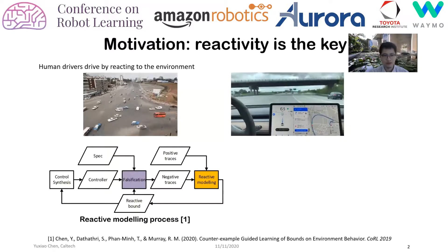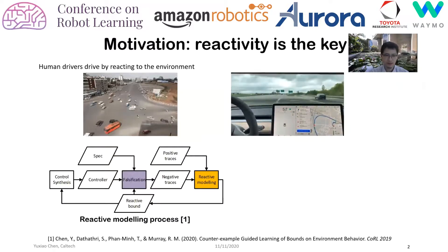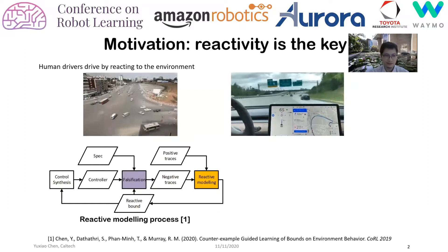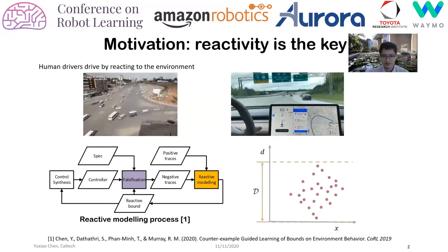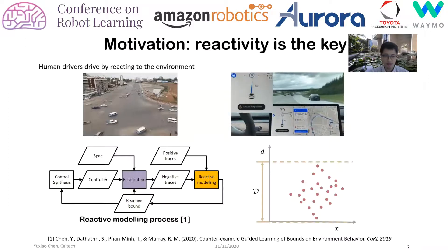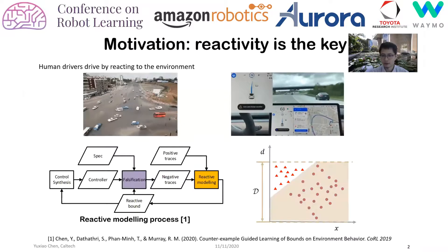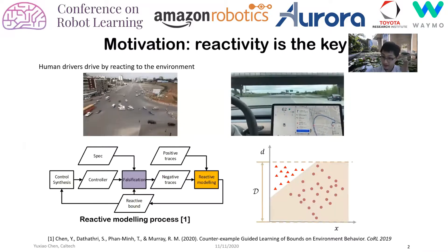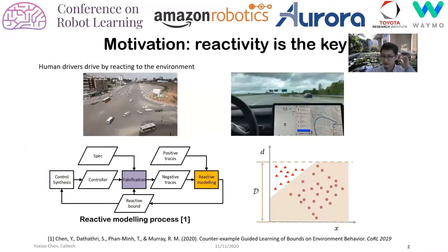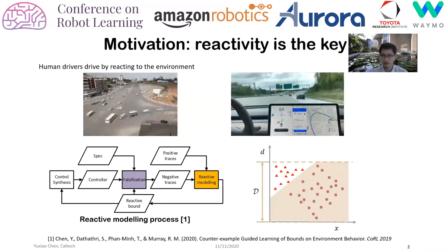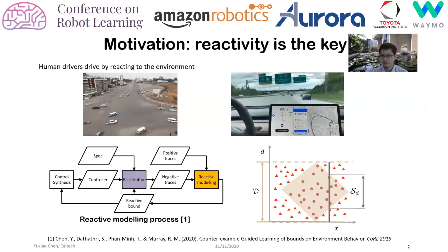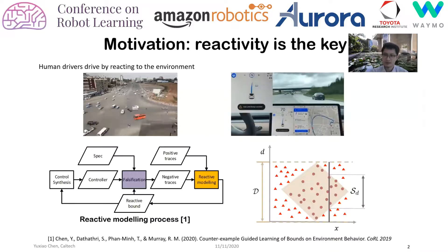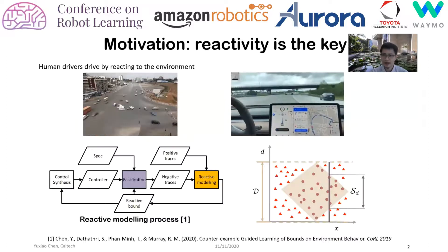Last year we started working on this problem. This is our previous paper, also at CORL last year, that uses falsification tools and SVM to gradually remove pieces of the input space that are dangerous and unrealistic. Eventually we get a mapping from the scenario to a set of possible actions.